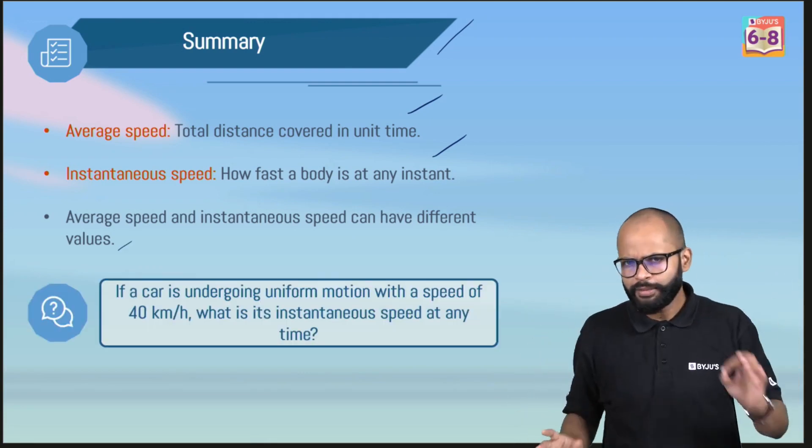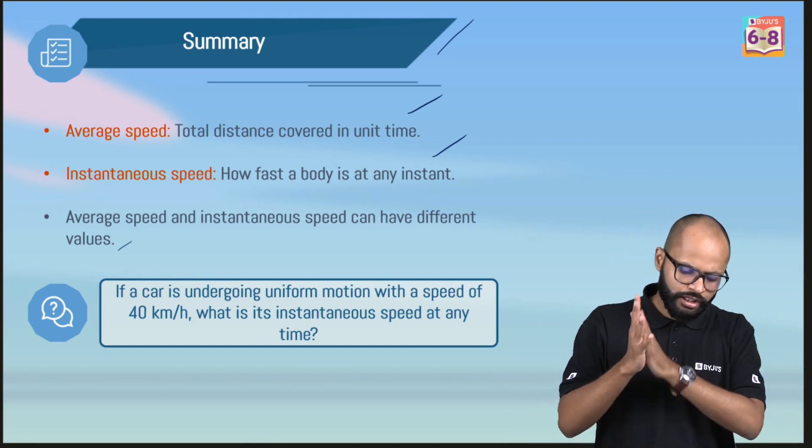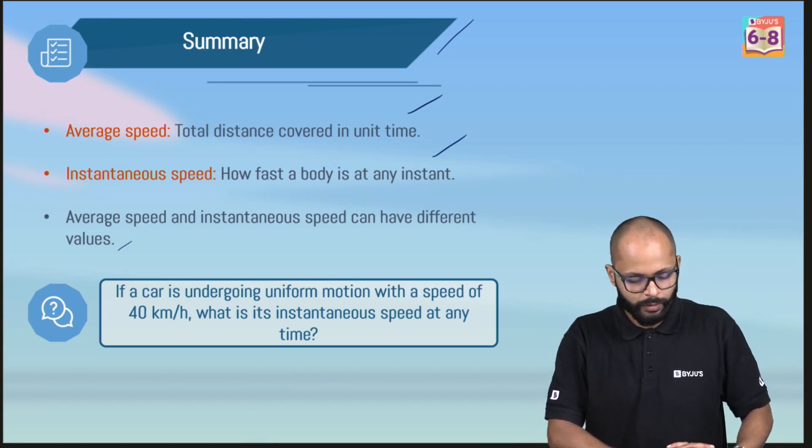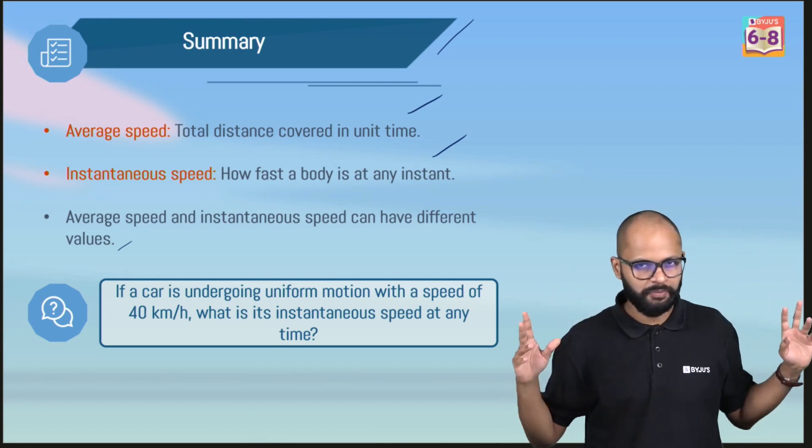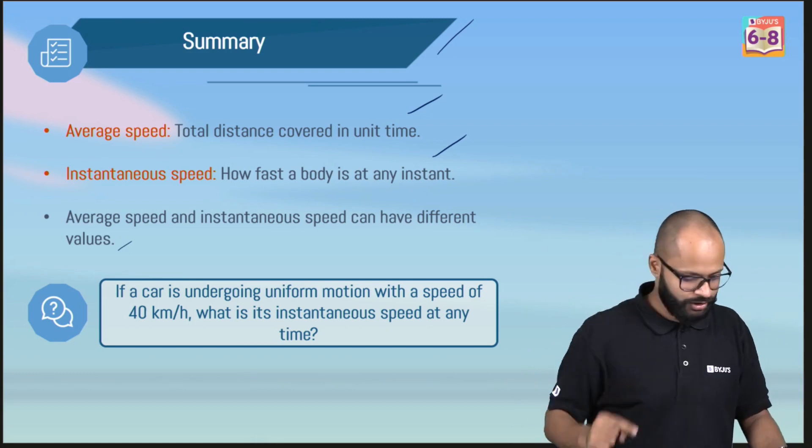If you understood all these things, let me ask you one question. I want the answers in the comment section. If a car is undergoing uniform motion with a speed of 40 kilometers per hour, what is its instantaneous speed at any given time? Is the question clear? Think about the question and answer in the comment section.